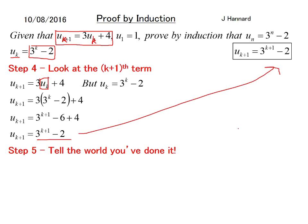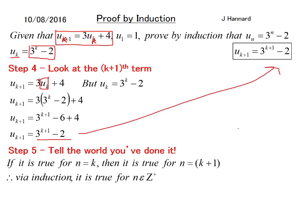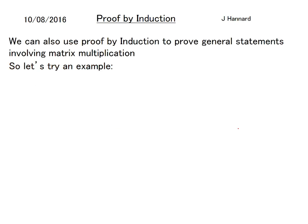So step 5, tell the world that you've done it and it's just the same statement over and over again. So that's recurrence relation induction, I think that's what it's called. They are inductive sequences but you don't want to use induct twice in a sentence do you.